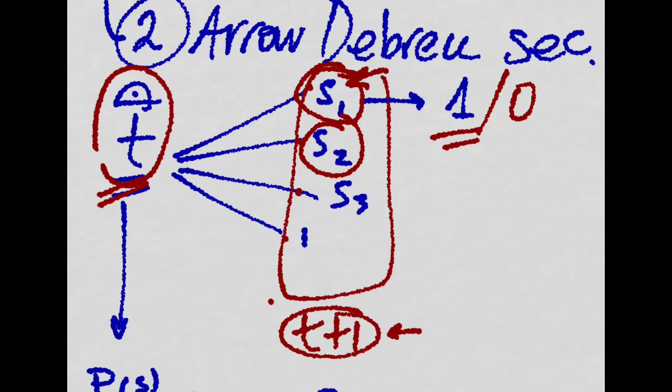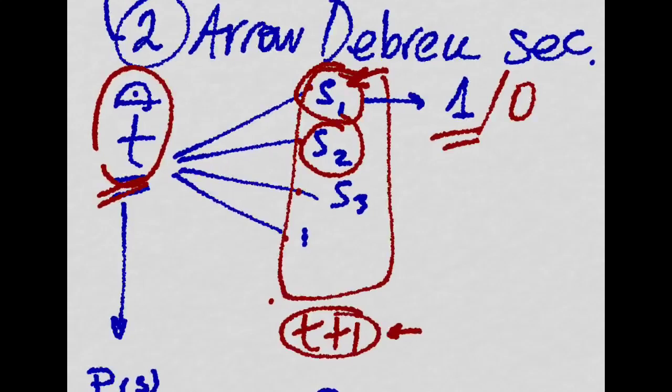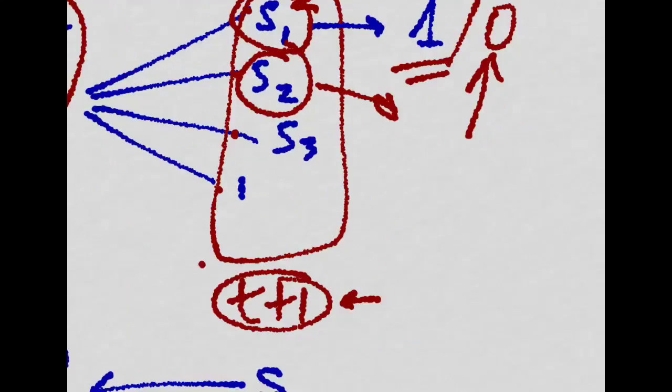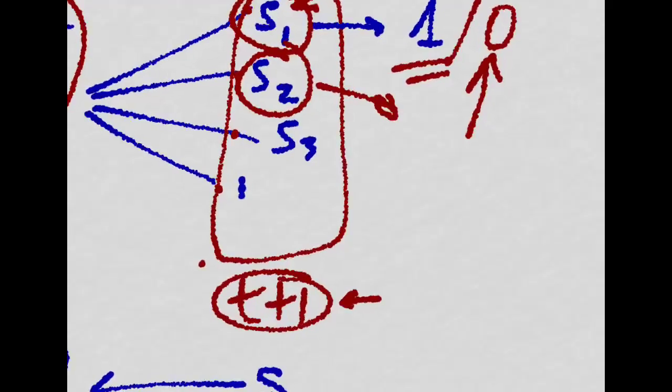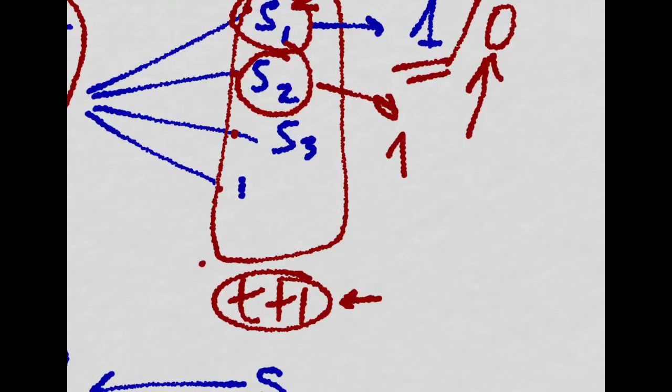If it doesn't, it doesn't pay you anything. You do the same for every state. You buy an Arrow-Debreu security that pays you one if the state occurs and nothing if the state doesn't occur.